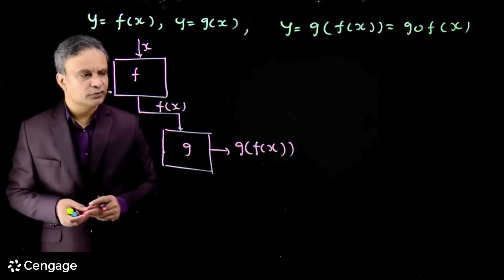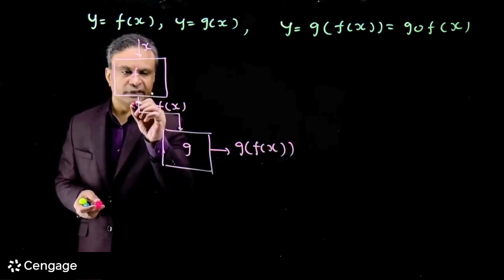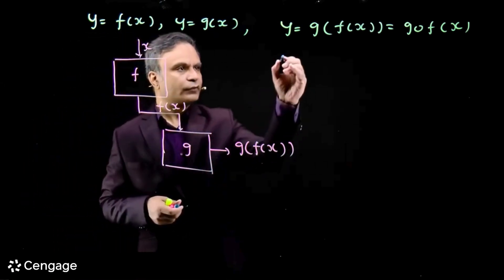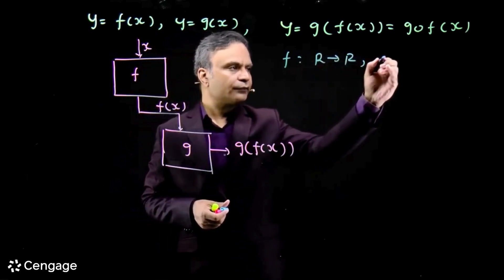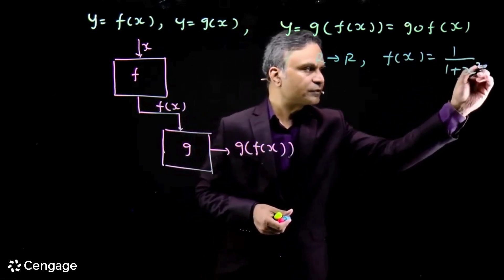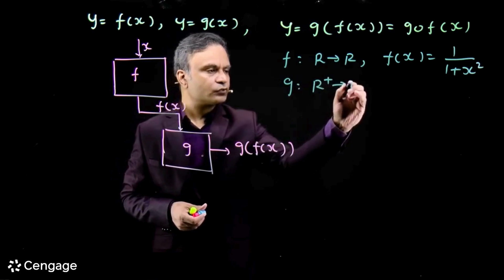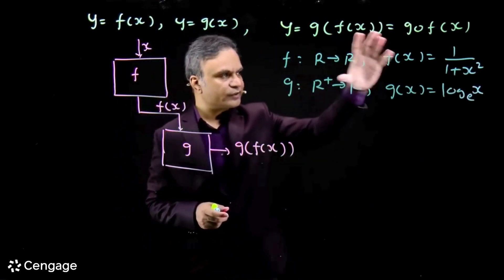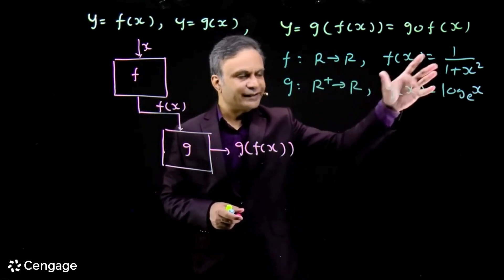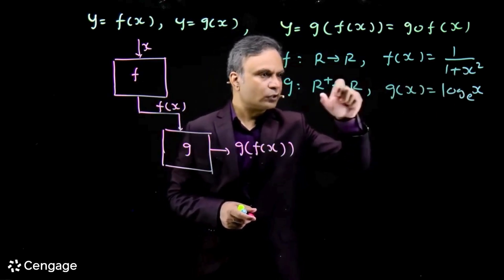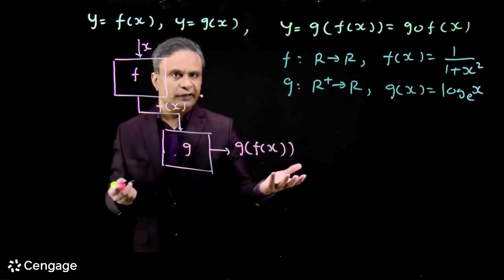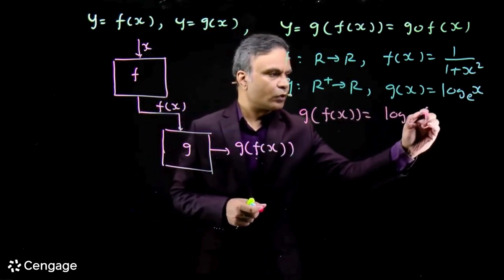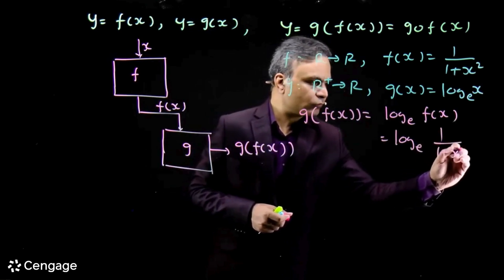Now, not all the output values of f(x) will be acceptable by function g(x). Consider functions f from R to R where f(x) = 1/(1+x²), and function g from R⁺ to R where g(x) = log x. The exhaustive domain of f(x) is R, and the exhaustive domain of log x is R⁺, since log x is defined for positive real values of x. Now we define the composite function g(f(x)) = log(f(x)) = log(1/(1+x²)).